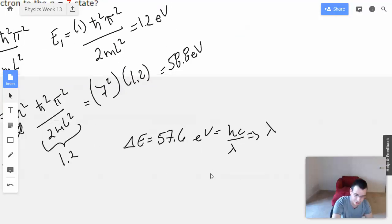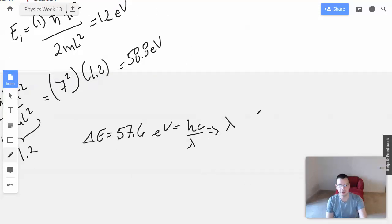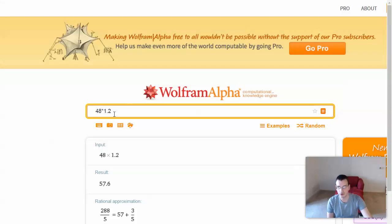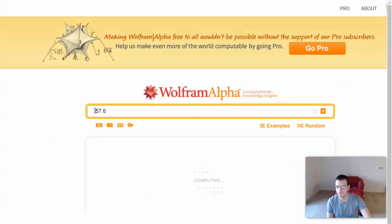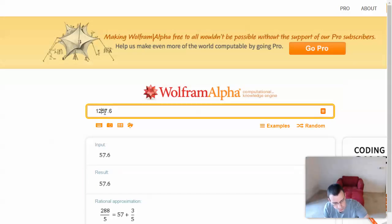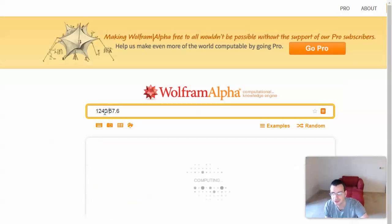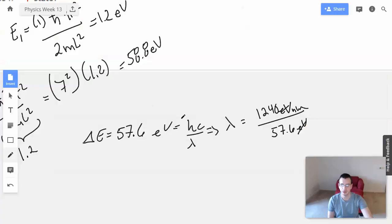So solving this, we have lambda equals 1240 electron volts nanometers over 57.6 electron volts. Cancel, cancel. 1240 divided by 57.6, and we get 21.5 nanometers. Quite an energetic little photon.